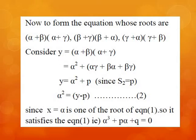Now we are going to form the equation whose roots are (α+β)(α+γ), (β+γ)(β+α), and (α+γ)(γ+β). We consider y = (α+β)(γ+α). Expanding, we get y = α² + αγ + βα + βγ = α² + p, because αβ + βγ + αγ = p. Therefore α² = y − p. This is equation 2.